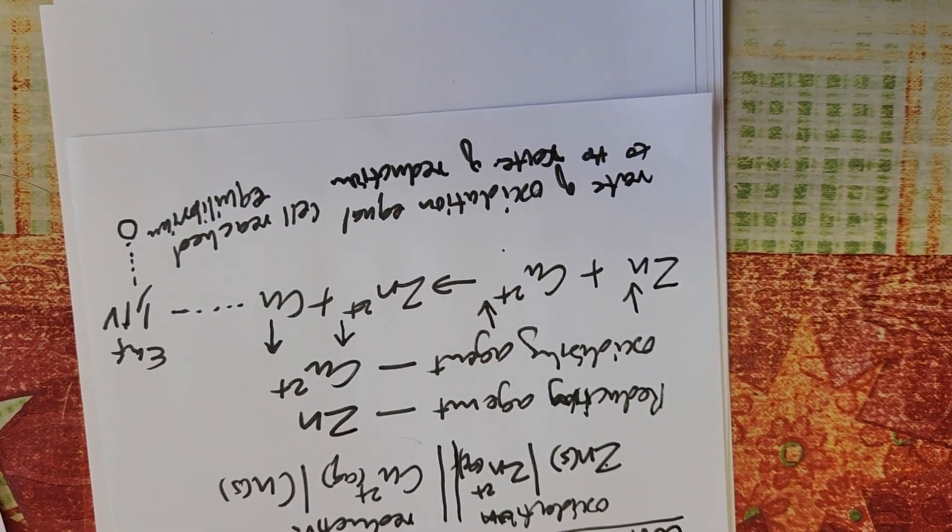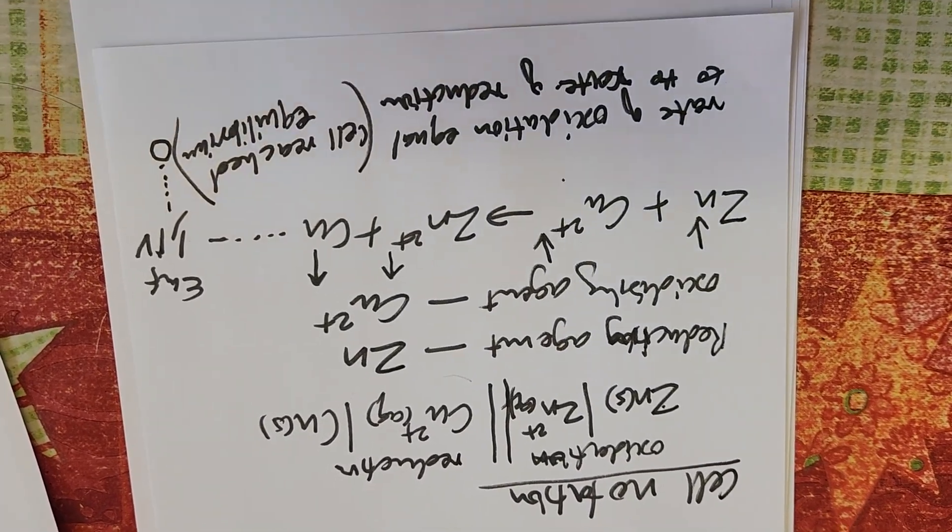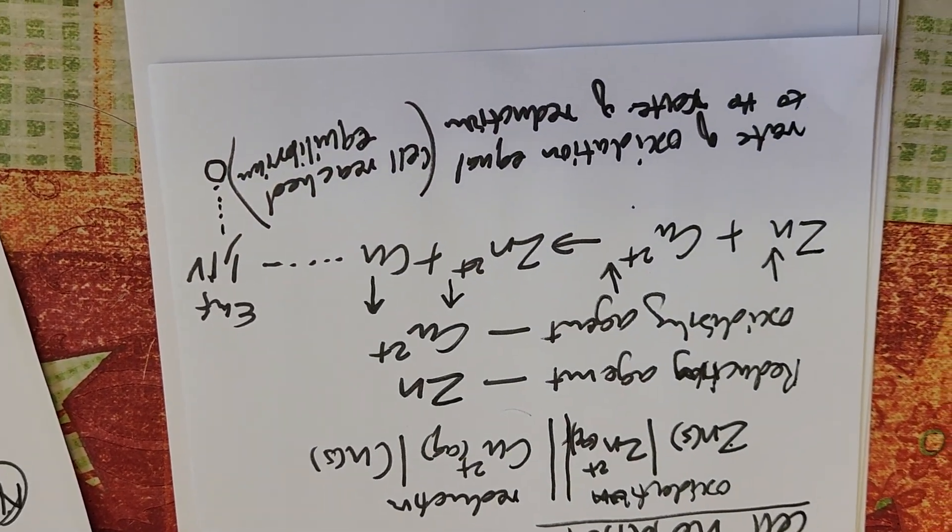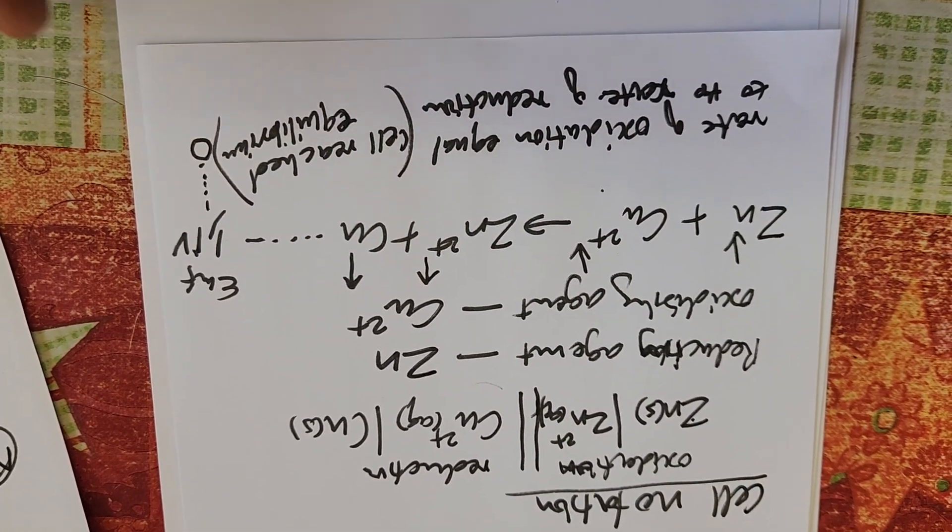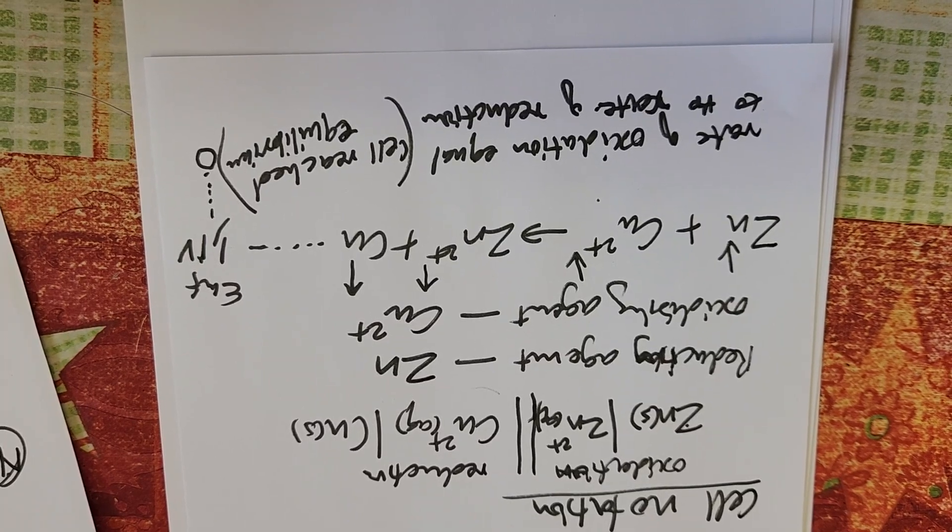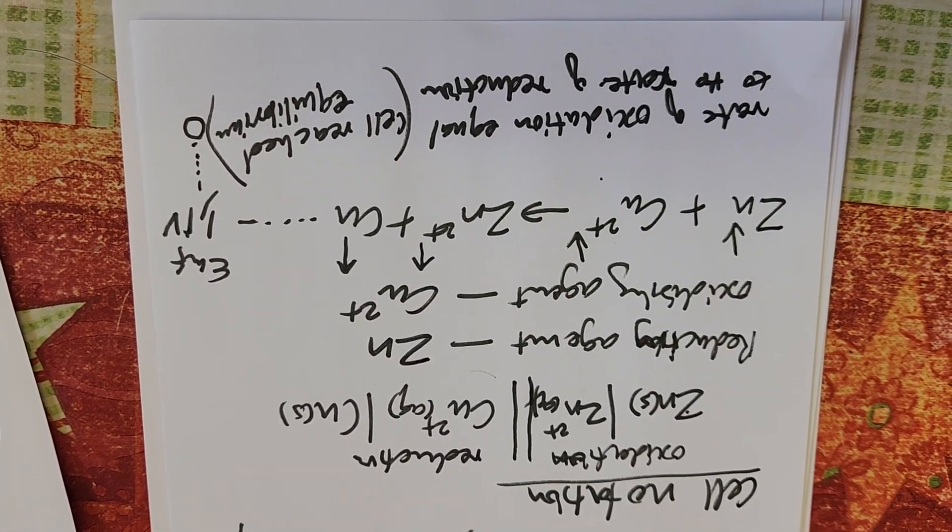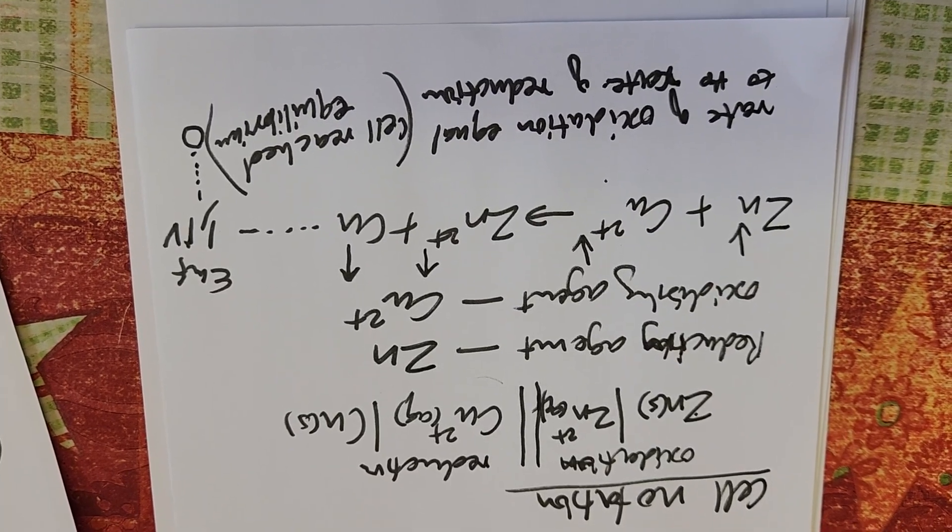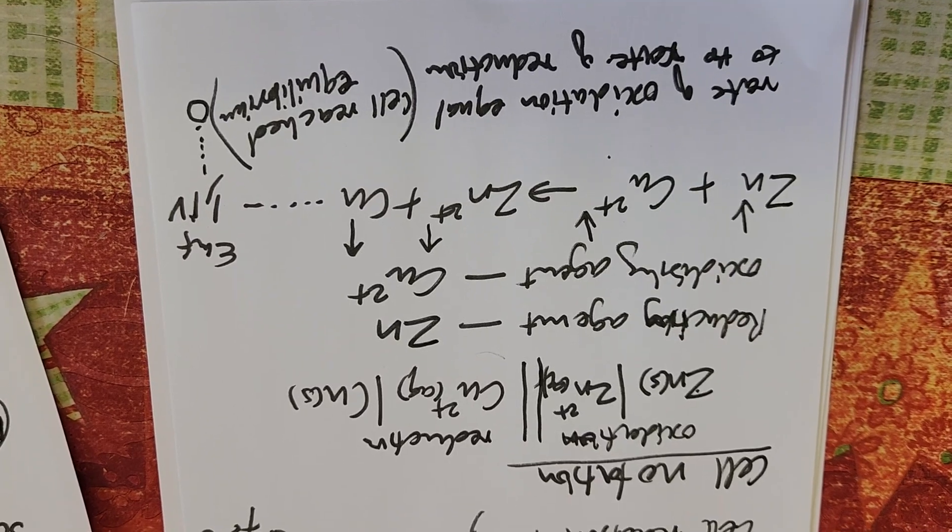So that is when the cell has reached equilibrium. If they say explain in terms of oxidation and reduction when the cell has reached equilibrium, this will be the perfect explanation in this case. Let's pause and then explain how the salt bridge maintains electrical neutrality in the cell.